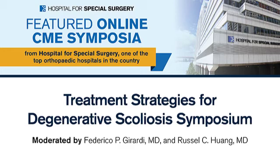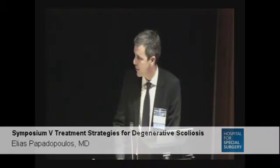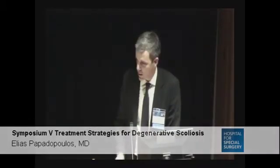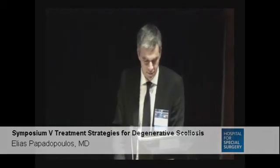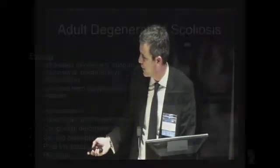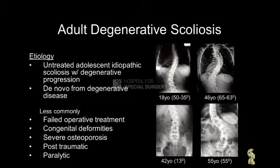The etiology of adult degenerative scoliosis is untreated adolescent idiopathic scoliosis, as you can see in this example, or de novo degenerative disease, as you can see in this example — a 42-year-old female with disc degeneration and how this progressed over the years.